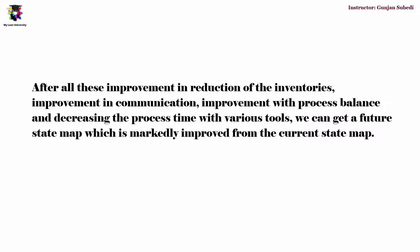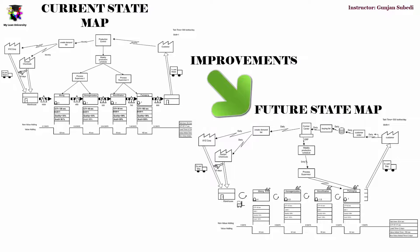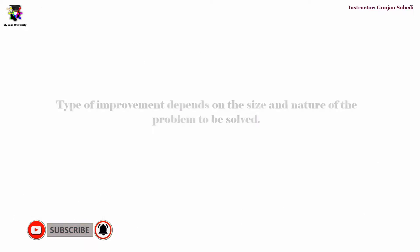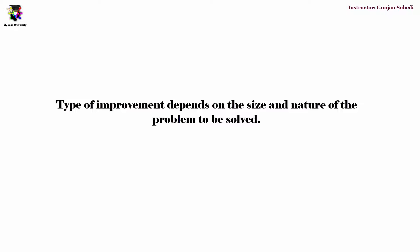After all these improvements — reduction of inventories, improvement in communication, improvement in process balance, and decreasing process time with various tools — we can get a future state map that is improved compared to the current state map. For example, the process time has reduced, the process is balanced, inventories are managed, communication is digitalized, and the system is automated with software. The process is made fast and efficient with various tools. As previously mentioned, there could be many other ways of improvement, and it all depends on the type of industry.